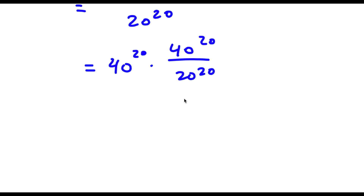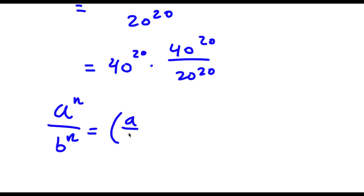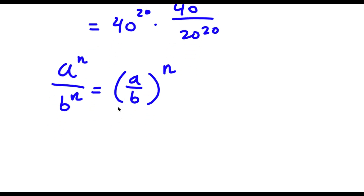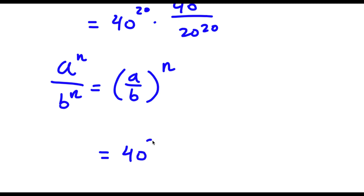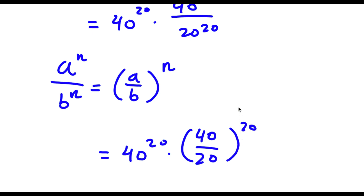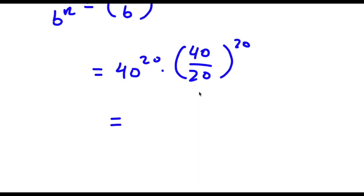So now, if I have something in the form a to the power of n over b to the power of n, this is equal to (a over b) to the power of n. So in this case, I have 40 to the power of 20 over 20 to the power of 20, and I can rewrite this as (40 over 20) to the power of 20. Now 40 over 20 is simply equal to 2.